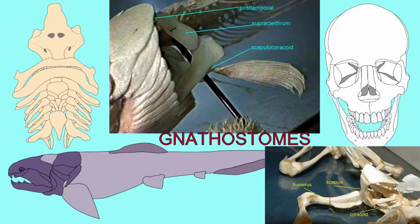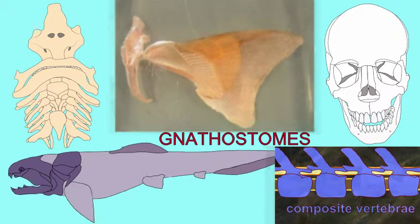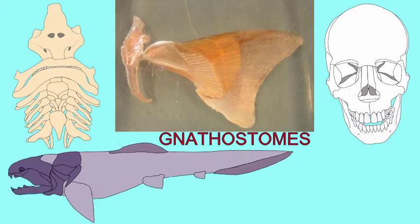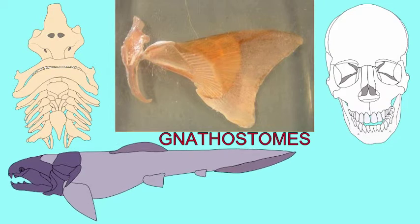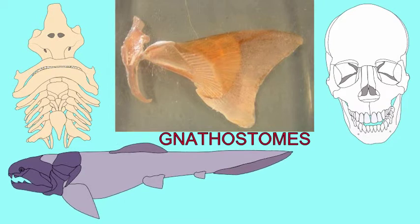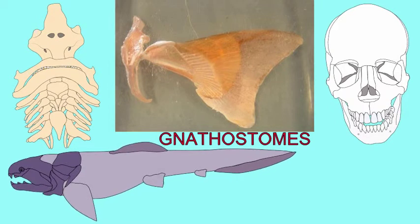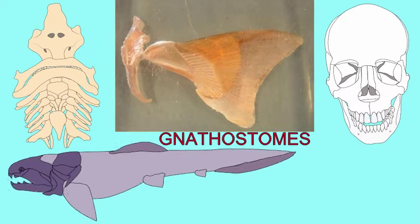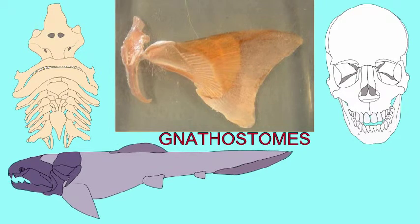The scapulocoracoid was later modified to form the scapula and coracoid bones in the shoulder girdle of the early amphibians. Speaking of girdles, the gnathostomes were the first fish to evolve the pelvic girdle and pelvic fin, which the early amphibians would modify to become the hip and leg of the tetrapods.